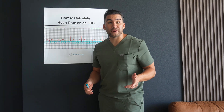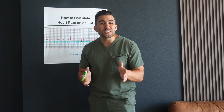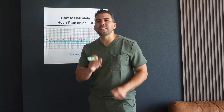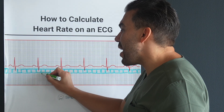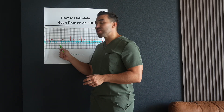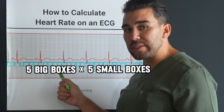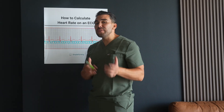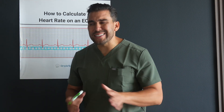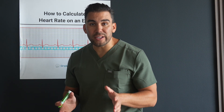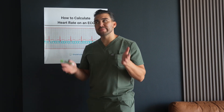For additional methods, let's look at the small square method, which is used for fast rhythms. Simply count the small squares between the R waves and divide 1,500 by that number. For example, inside one big blue box there are five small squares, and five big boxes times five small boxes each equals 25. So 1,500 divided by 25 is 60. This is a poor example since it's not a fast heart rate — it's borderline bradycardia — but technically on the NCLEX and nursing exams, it's normal.